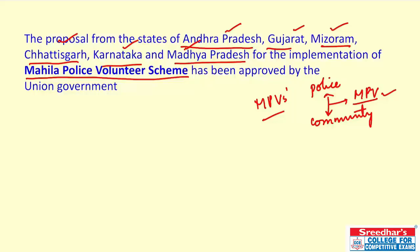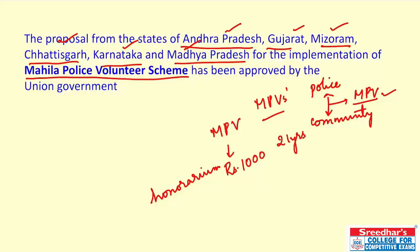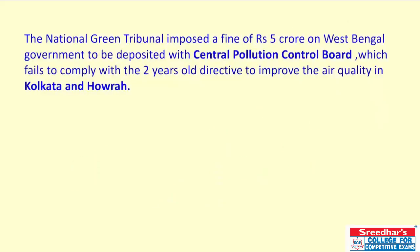Under the Mahila Police Volunteer scheme, volunteers are required to mobilize the community through Mahila and Shishu Rakshak Dals and act as watch groups. They will be paid a monthly honorarium of ₹1,000, must be at least 21 years old, and must have passed the 12th standard. The first state to adopt this initiative was Haryana, and now it will be implemented in other states.